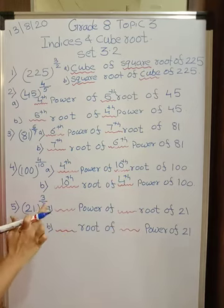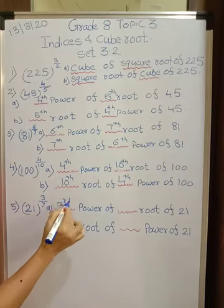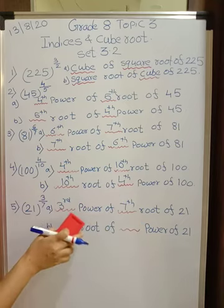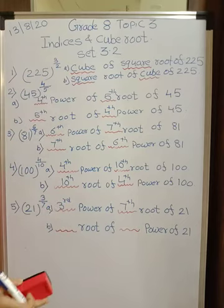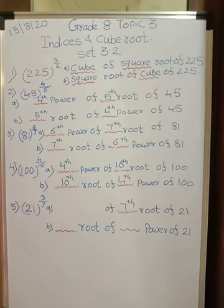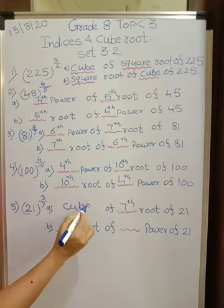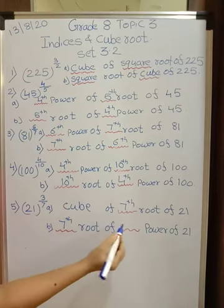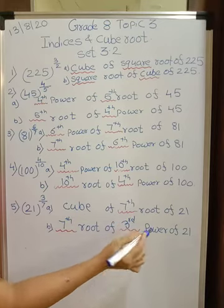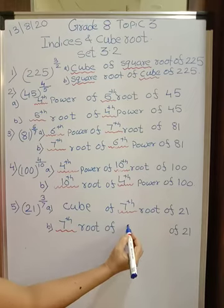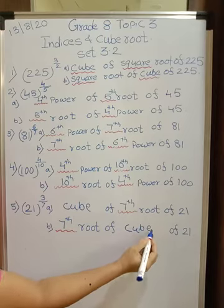Now 21 raised to three upon seven. So it will be third power of seventh root of 21. But third power is called as? Cube. If it is second power we would have written square. Only for two and three you should remember, there are specific words. So third power I can write only cube. Cube of seventh root of 21. And this is seventh root of third power of 21. But third power is called as cube in mathematical language, so I am writing here cube.